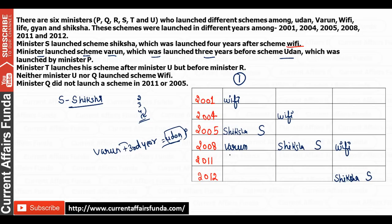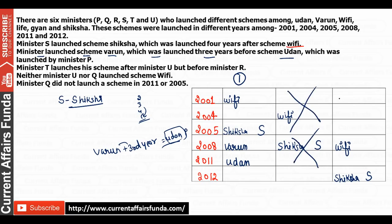Continuing: if Varun is in 2001 and Udan in 2004, but Wi-Fi is already fixed in some positions, we check compatibility. If Wi-Fi is fixed in 2004, then Varun cannot be in 2001 giving Udan in 2004. If Varun is in 2005 and Udan would need to be in 2008, but Wi-Fi is fixed there — that also fails. So basically there is one valid possibility for the Varun and Udan pair. Write Minister P accordingly.